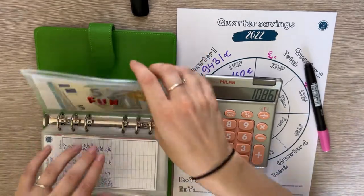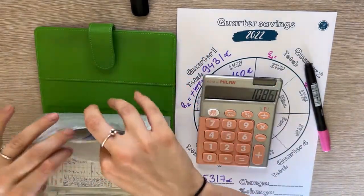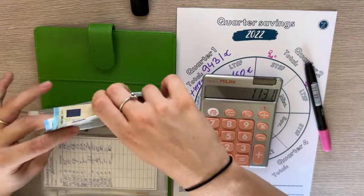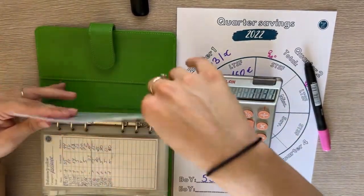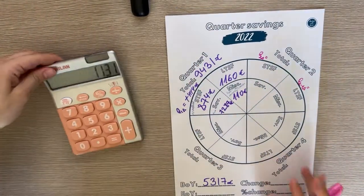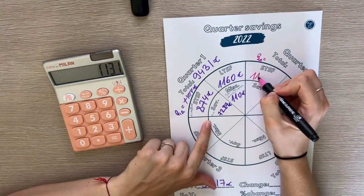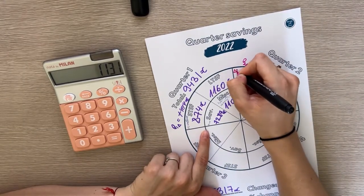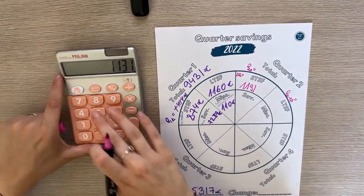The total in short-term sinking funds for quarter two is 1,131. The change from quarter one is a positive 257 euro change. Great.